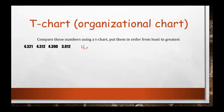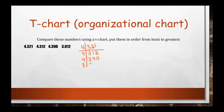All right, so we have four and three hundred twenty-one thousandths. You can draw a line — this line right here indicates the decimal point. Then we have four and three hundred twelve thousandths, four and three hundred ninety thousandths, and three and twelve thousandths. I have these organized in the chart with each number lined up.